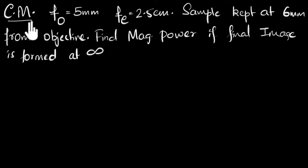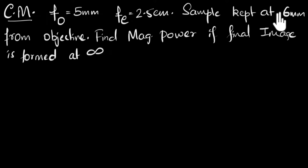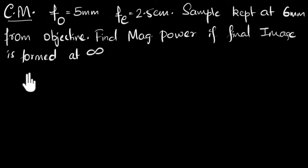We have a compound microscope whose objective focal length is five millimeters and eyepiece focal length is two and a half centimeters. A sample is kept at six millimeters from the objective. Find the magnifying power of this microscope if the final image is formed at infinity.